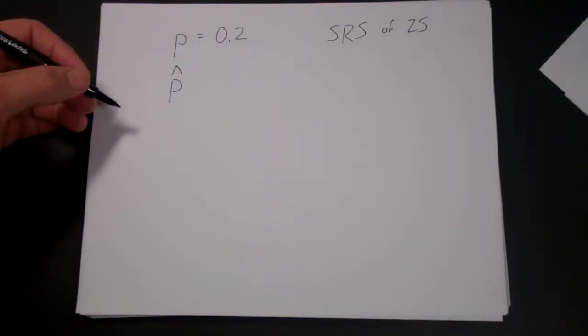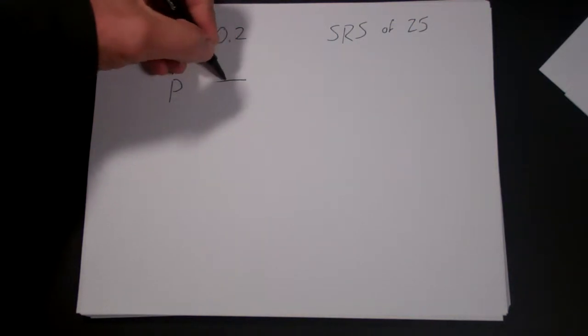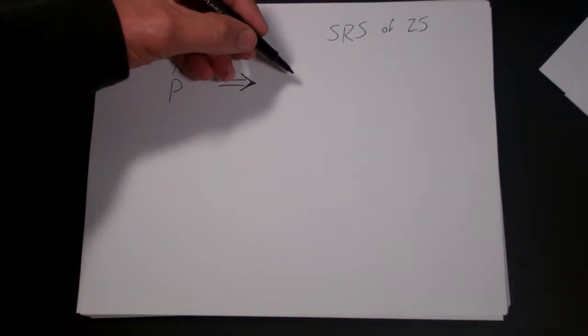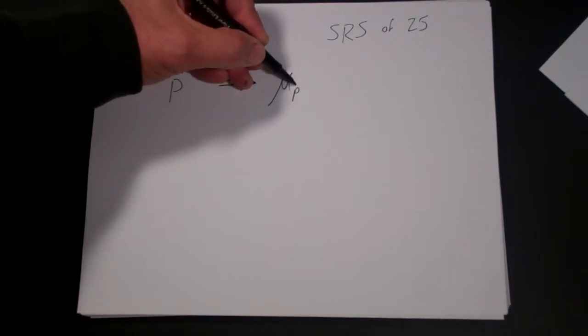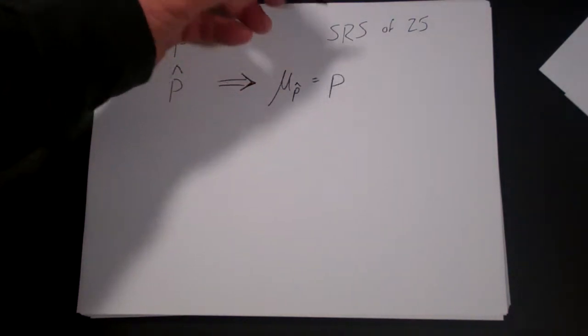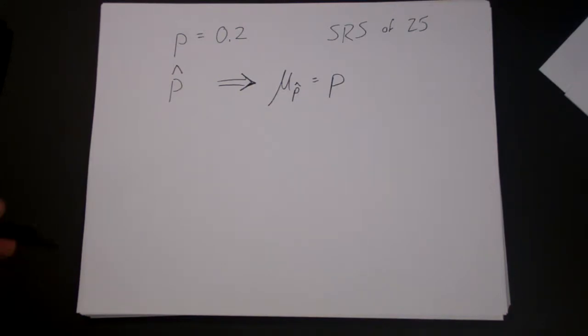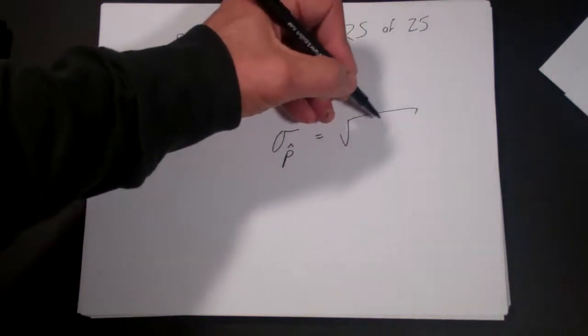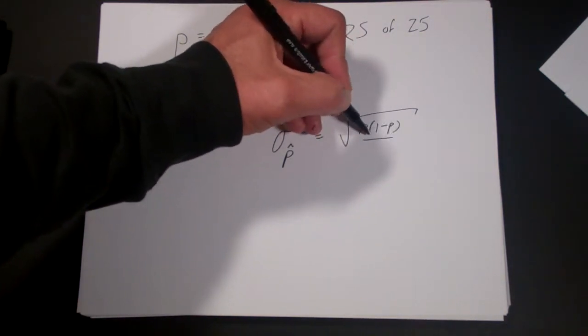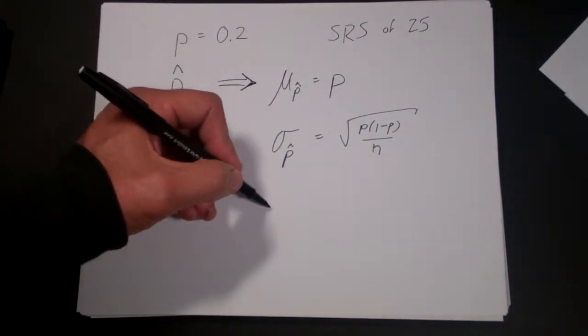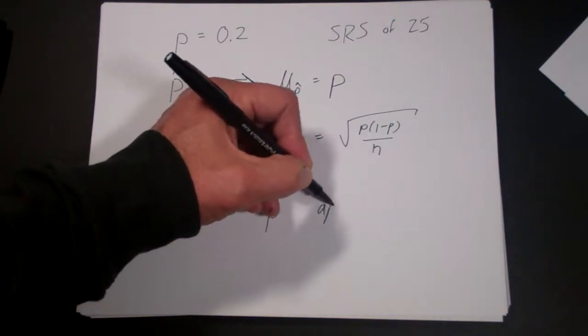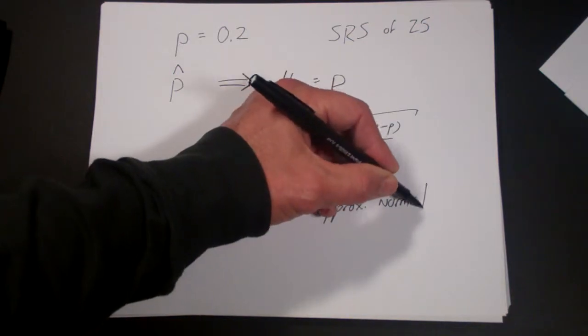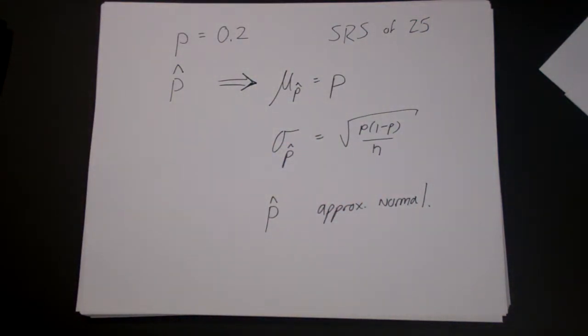The key thing about p hat is, under certain conditions—that we take a simple random sample and our sample size is large enough—we know that mu p hat will equal p, that is, p hat is an unbiased estimator. And we know that sigma p hat will equal the square root of p times 1 minus p over n. And further, we know p hat will be approximately normal under certain conditions.